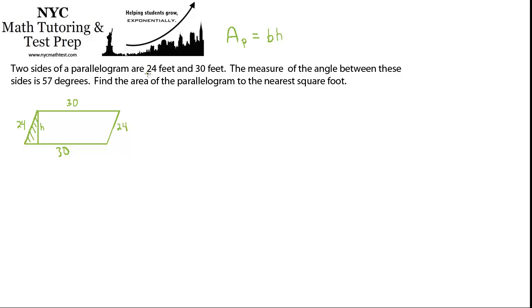We know, so far we've used the 24 feet, we've used the 30 feet, but we haven't used the idea that the angle between these sides is 57 degrees. So where is that? Is this angle 57 degrees, or is this angle 57 degrees? Well, the one up here is obtuse. So it can't be that. That angle has to be at least 90 degrees. The one down here is acute. So this is the angle that's 57 degrees.